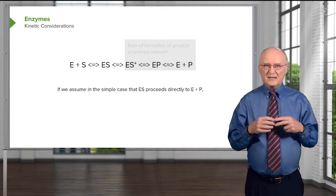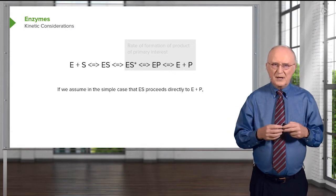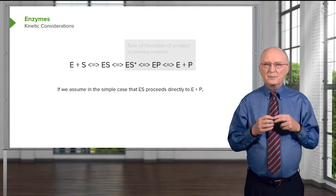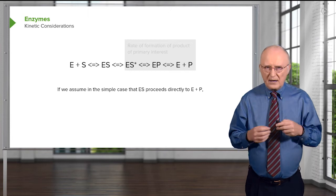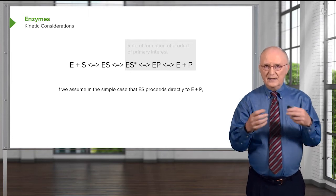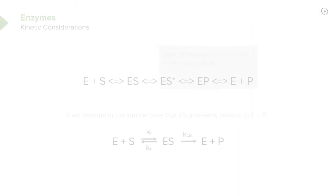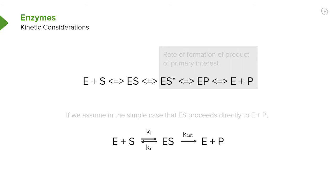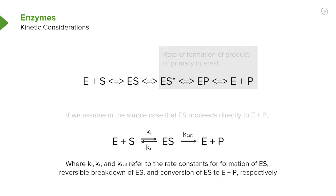Well, to do this we need to make some simple assumptions. And so we assume in the simple case that the enzyme substrate complex proceeds directly to enzyme plus product. So we've simplified this more complicated equation above to a simpler equation below, and this is done to help us better understand what's going on in the overall mechanism.